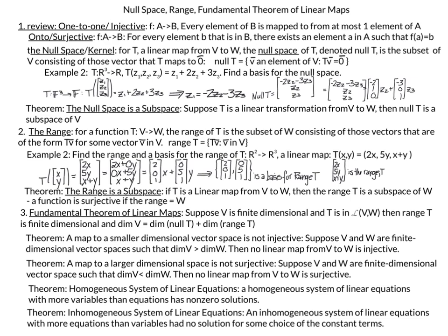We will start by reviewing the definition of one-to-one or injective functions and onto or surjective functions, because those concepts come up later in theorems. A one-to-one injective function f from a set A to a set B means every element of B is mapped to from at most one element of A. For onto or surjective, for every element b in set B there exists an element a in set A such that f of a equals b.